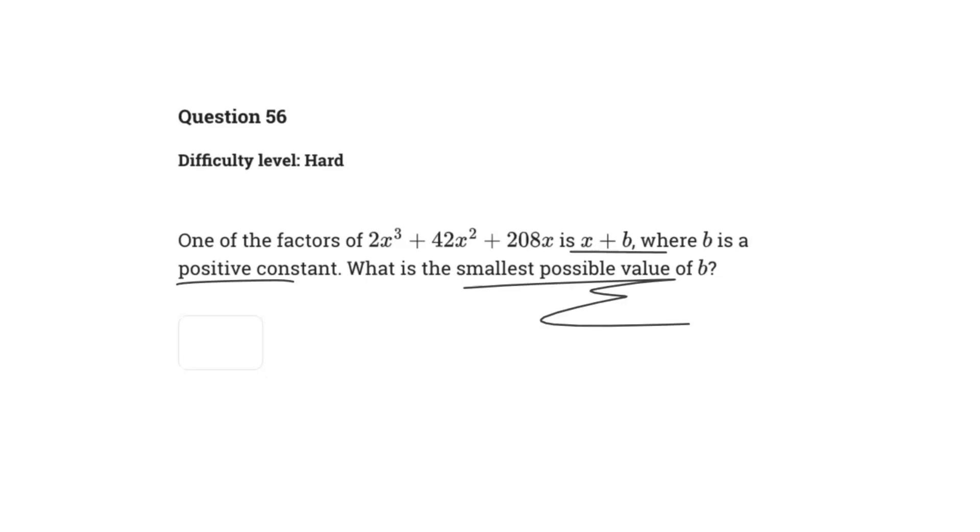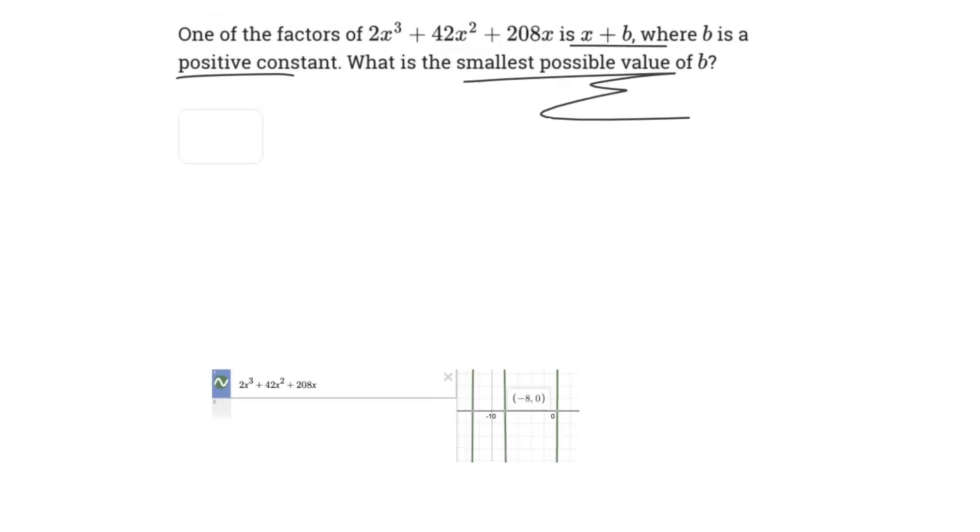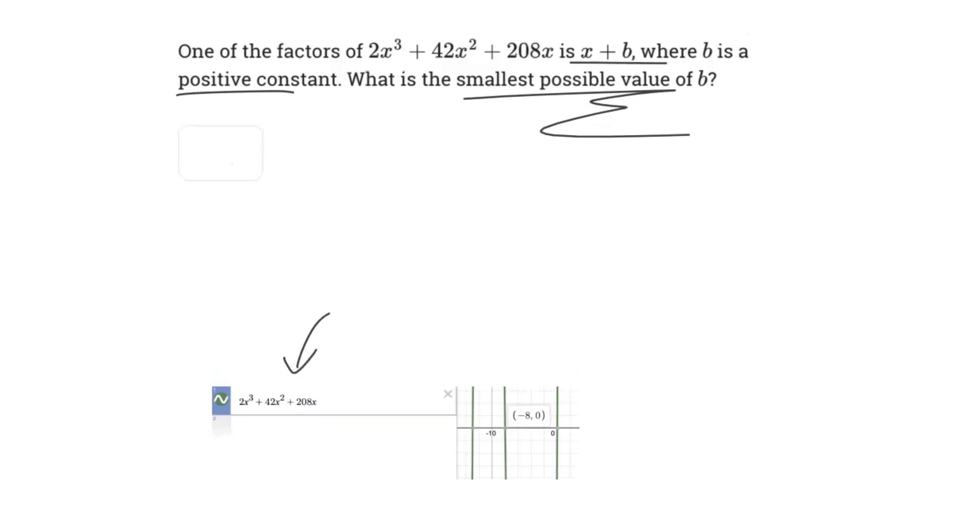So this one takes about 10 seconds to do. You can see right here, all you got to do is plug it in and look at the intersections. So we can see that it has to be a positive constant, and so the intersection at zero doesn't count.